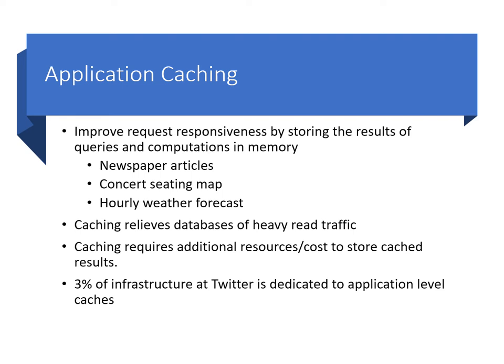The net effect is to reduce the computational load on all of our services and databases and create headroom or capacity for more requests. Caching itself requires additional resources and hence cost to store cached results. However, well-designed caching schemes are low cost compared to upgrading the database and the service nodes to cope with higher request loads. As an indication of the value of caches, approximately 3% of the infrastructure at Twitter is dedicated to application-level caching. At Twitter scale, operating hundreds of clusters, this is in fact an awful lot of infrastructure.